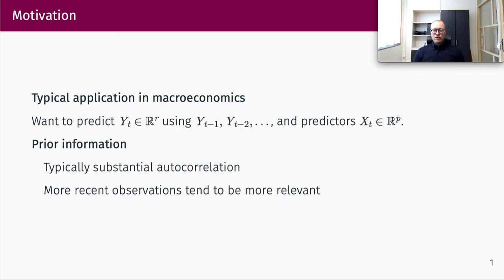Typically we want to predict a response vector y_t, which is r-dimensional, using information y_{t-1}, y_{t-2}, and so on — that is, previous values of the response. We may also want to use some other time series or predictors that we think might be useful. In time series settings, we typically have prior information: there is usually substantial autocorrelation, meaning we expect correlation between y_t and its lag values.